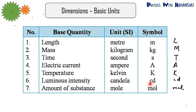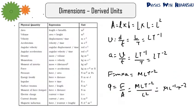We also have two other units: radian and steradian. Radian is the 2D angle and steradian is the 3D angle. So there are 7 base units plus 2 angle units. With the help of these 7 plus 2 units we can derive all the formulas of physics.